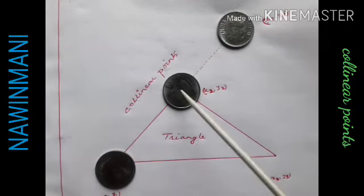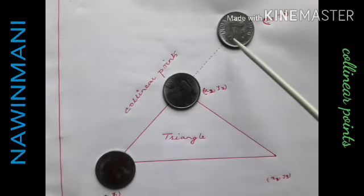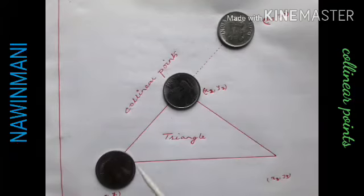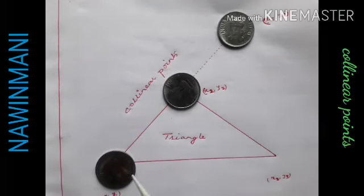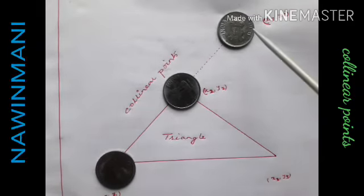So for these three points, if you want to prove that they are collinear, what you have to do is assume the three points form a triangle, then find the area using the formula. The area value will be zero.